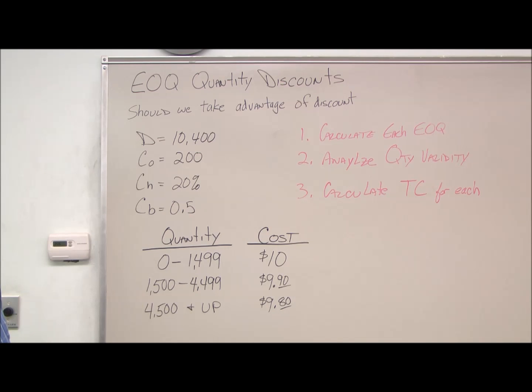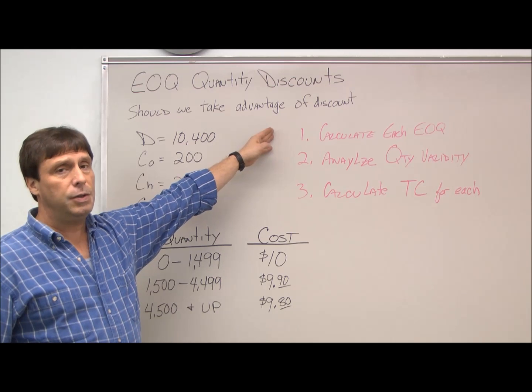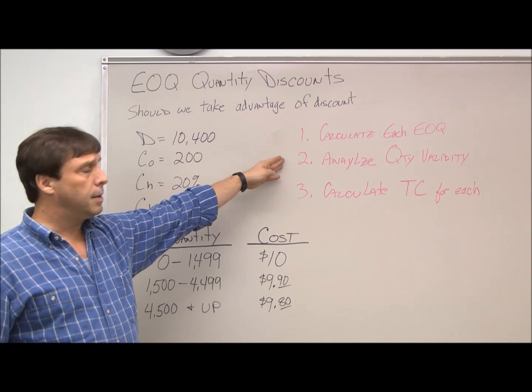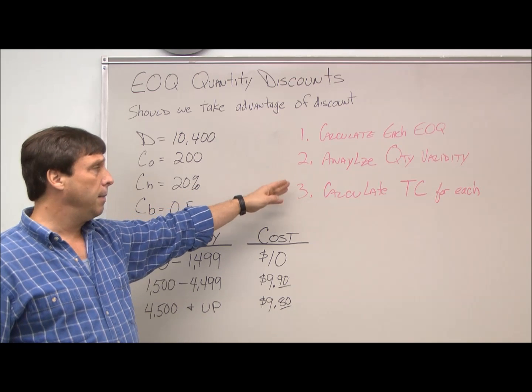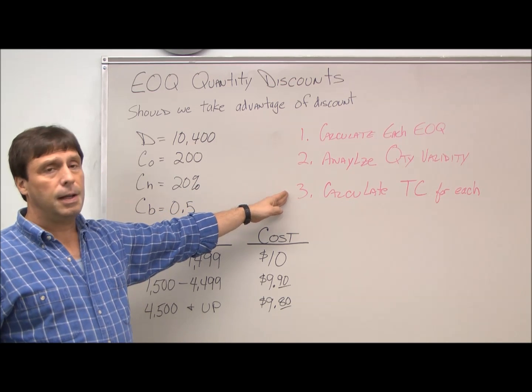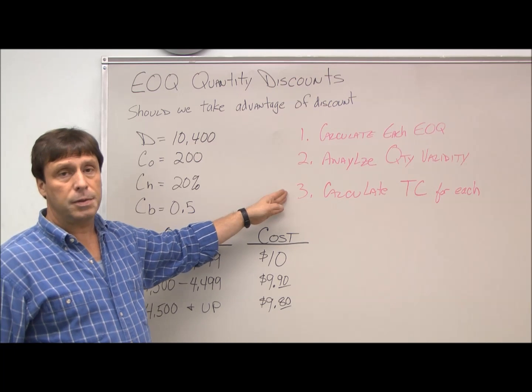The way we handle quantity discounts is we calculate the EOQ for each. We analyze the quantity for validity and adjust if necessary. And then we calculate the total cost for each. And of course our goal is to go with the lowest total cost.